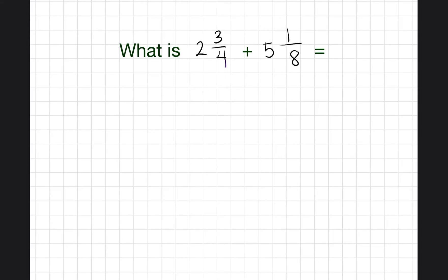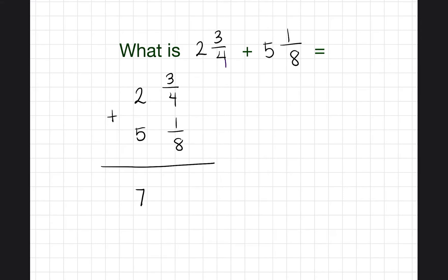The very first thing I recommend doing is to write them below each other: two and three-fourths, and below it, five and one-eighth. Then I would recommend adding the whole numbers — two plus five is seven. Now we have to add the fractions: three-fourths plus one-eighth.